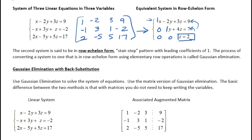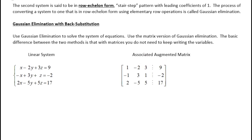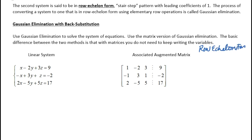We're going to use the matrix version of Gaussian elimination. The basic difference is that with matrices, you do not need to keep writing the variables. We're going to go start to finish: take the linear system, write the augmented matrix, put it in row echelon form, and then back substitute.